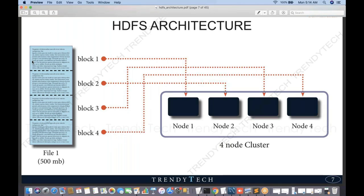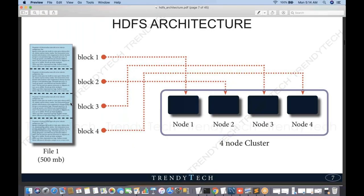This 500 MB file is divided into four blocks, and each block is stored on a different node as shown in the diagram. This is a better choice than storing the entire file on one machine. We are leveraging all resources wisely — the file is broken down into blocks, and these blocks are stored across the nodes in the cluster.